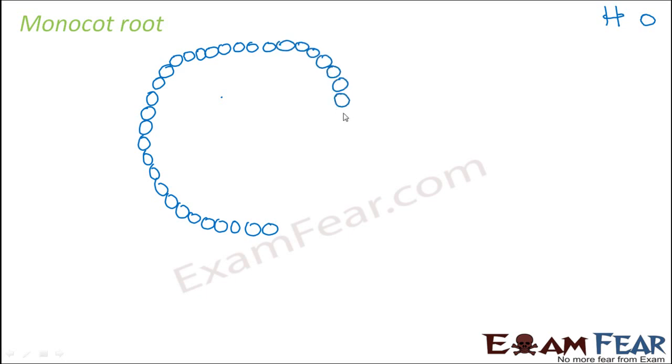Let us study the structure of monocot root now. I will explain the internal structure of monocot root with a simple diagram. Let us suppose this is the root of a plant and you take a cross-section of it — the cross-section would look somewhat like this. Now let us study the internal structure of that cross-section. The outermost layer of the root is made up of epidermal cells.